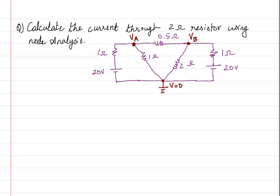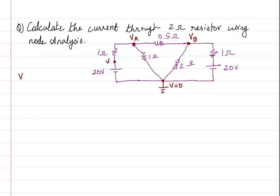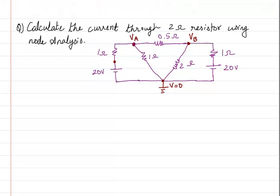Because we have marked this as the reference node, the voltage here will be equal to 0. So, if this is 0, then whatever voltage V exists at the adjacent node, V minus 0 is going to equal 20. Therefore V equals 20. So here I will directly write 20 volt, because 20 minus 0 gives 20 volt.